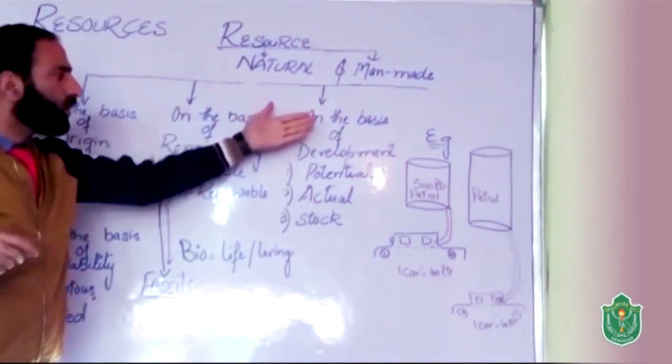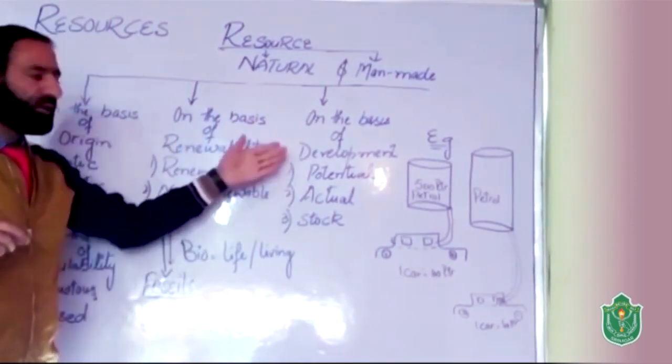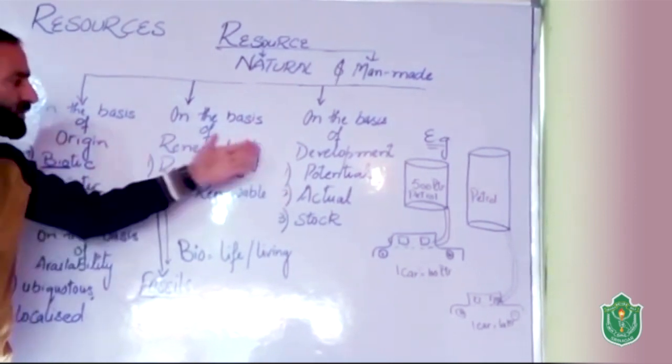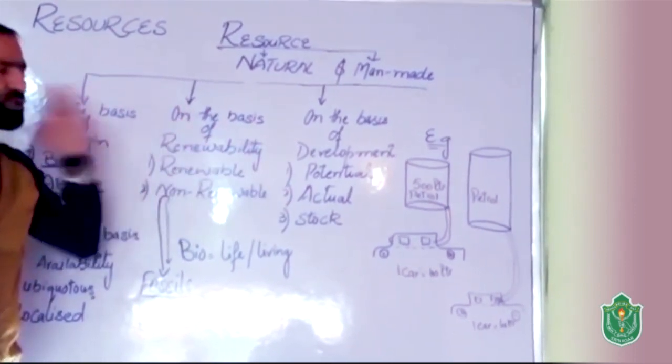Now the third stage, on the basis of development, resources are of three types: potential, actual, and stock.